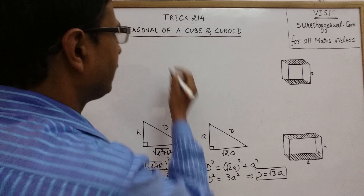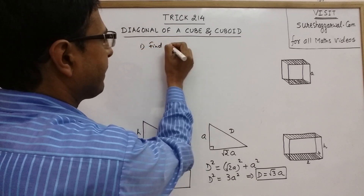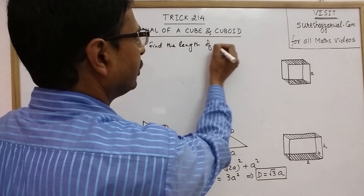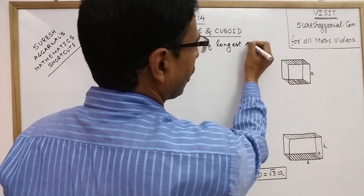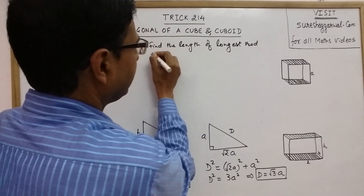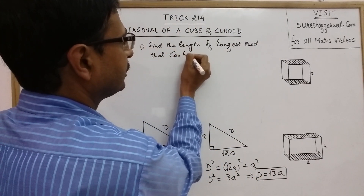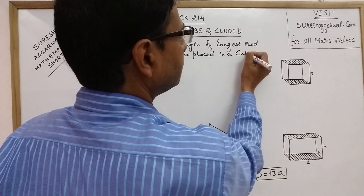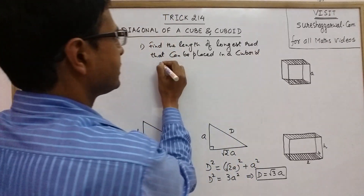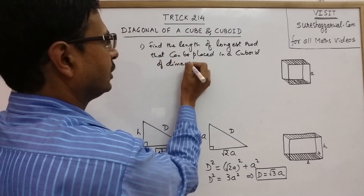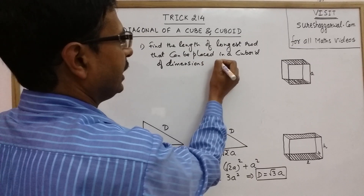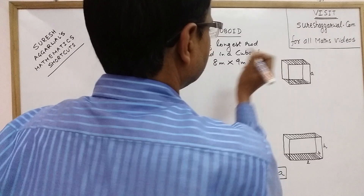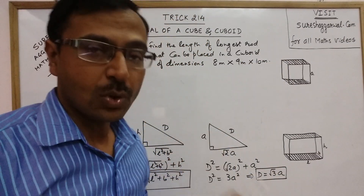Now suppose we have a problem: we have to find the length of the longest rod that can be placed in a cuboid of dimensions 8 meters, 9 meters, and 10 meters.